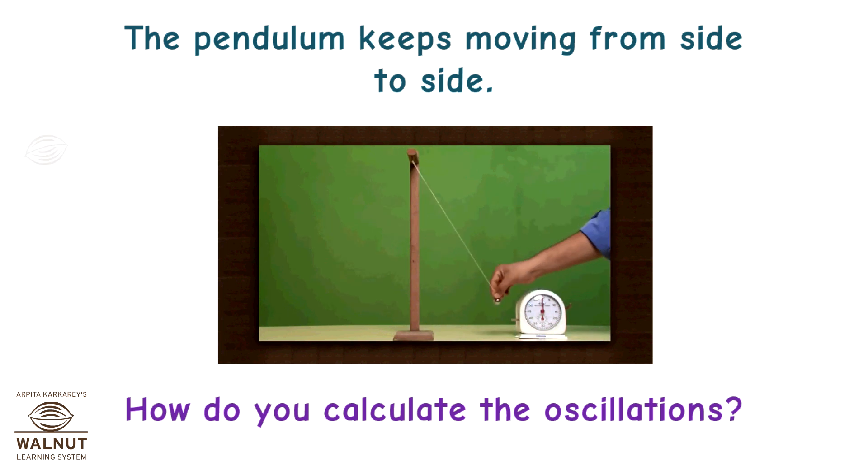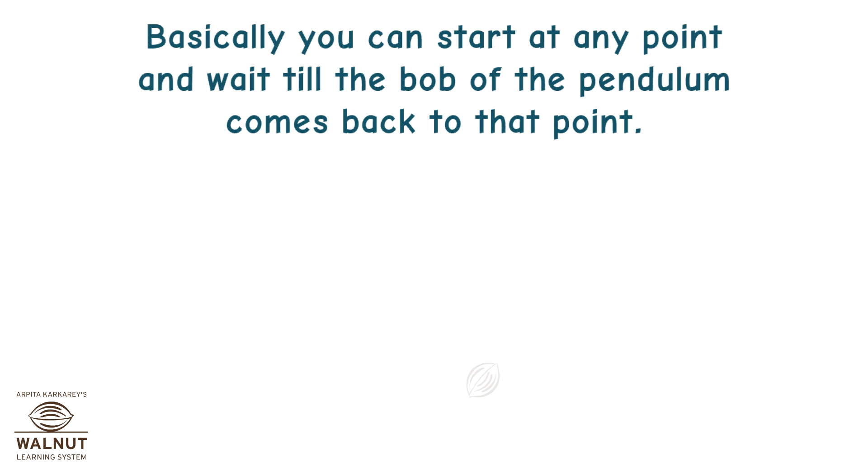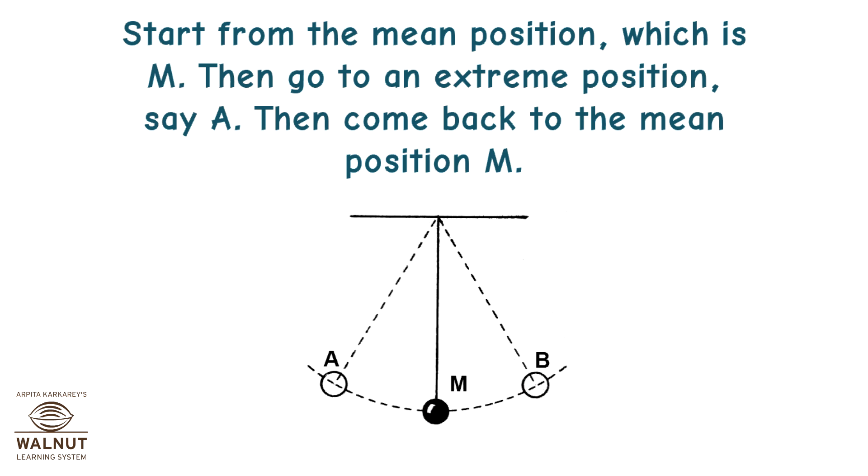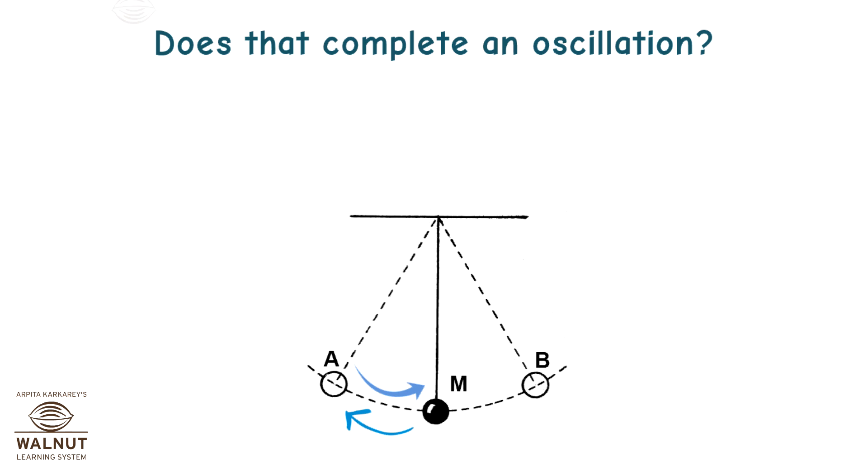How do you calculate the oscillations? Basically, you can start at any point and wait till the bob of the pendulum comes back to that point. But then, everyone would count differently. So scientists have fixed the method of counting one oscillation. Start from the mean position, which is M. Then go to an extreme position, say A. Then come back to the mean position, M. Does that complete an oscillation?